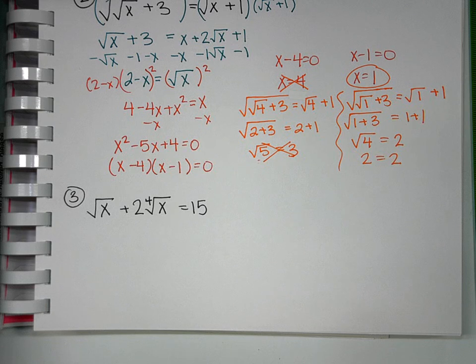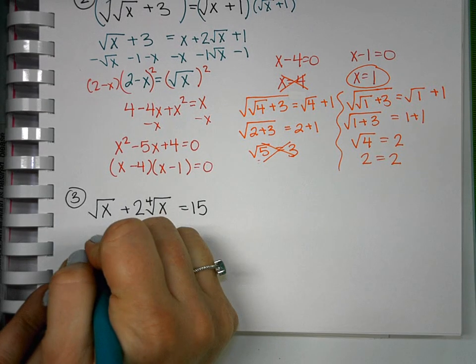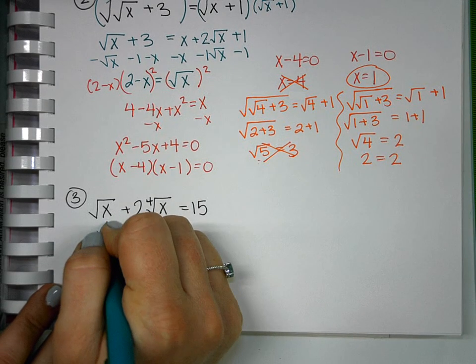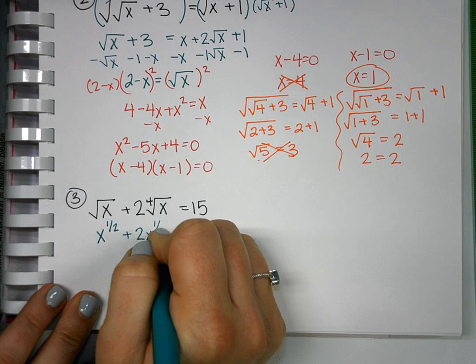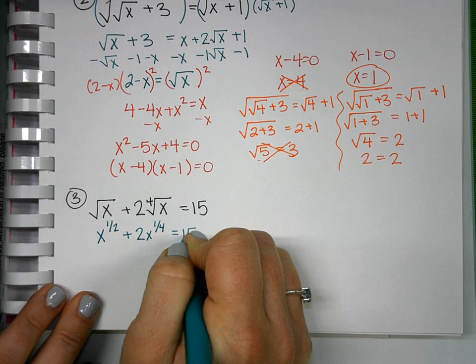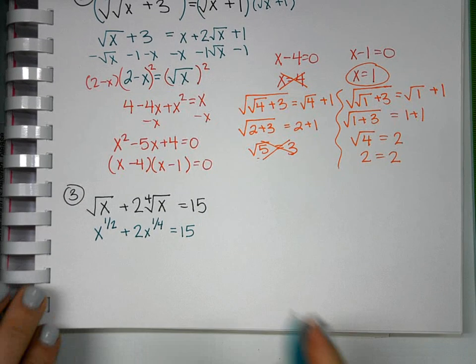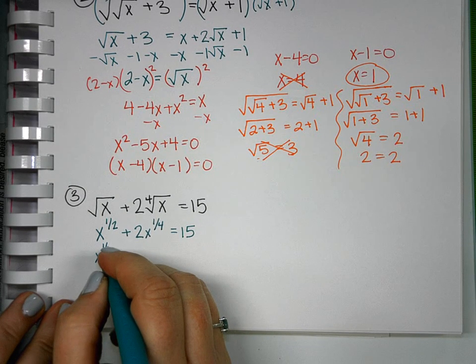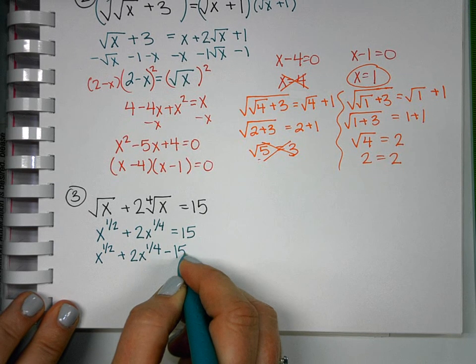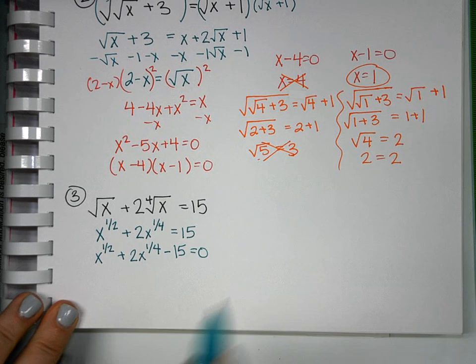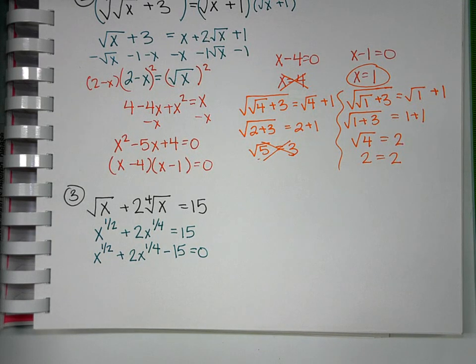First thing I'm going to do when they're not the same is I'm going to put them as fractional exponents so that we can look at them like we did with the 2-4 problems and the 2-3 problems. Square root of x becomes x to the 1 half. Fourth root of x will become x to the 1 fourth. And then I notice that if I move the 15 over, I'll get x to the 1 half plus 2x to the 1 fourth minus 15 equals 0.